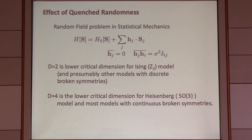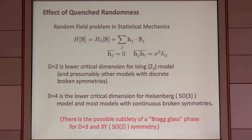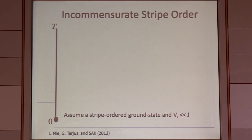The first theorem is that D equals 2 is the lower critical dimension for the Ising model — meaning there can be no ordered state, no broken symmetry in dimension 2 or less. And D equals 4 is the lower critical dimension for all continuous symmetries, including Heisenberg symmetry. There's a subtlety for the XY model in three dimensions that I won't get into, but I mention it in the interest of truth in advertising.